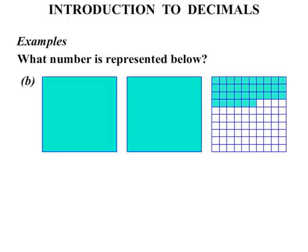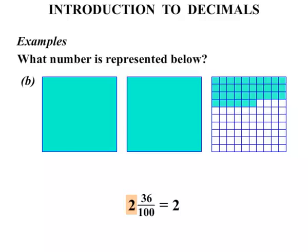Next one — what have we got here? In terms of wholes, we've got one, two — so let's write the two down. And in terms of the fraction part, if you counted them up, you'll find 36 out of 100, so 36 hundredths. As a decimal, we write the two for the whole number part, and 36 over 100 we'd write as 0.36. Again, because it's over 100, we would expect two decimal places.